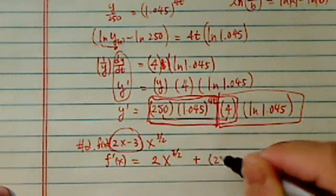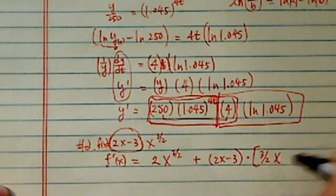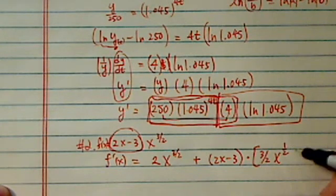Okay, that's the easy part. Leave the second part alone. Plus, leave the first part alone. Take derivative of the second one, which is 3 over 2 times x to the 3/2 minus 1, which is half.